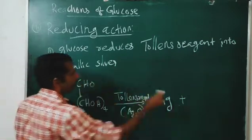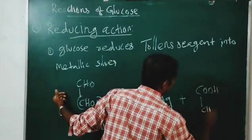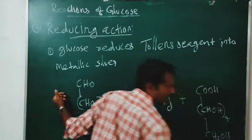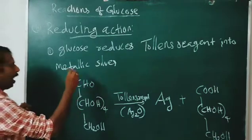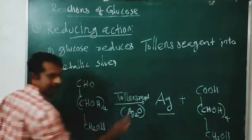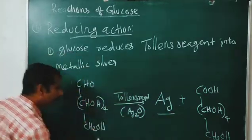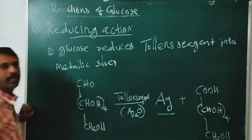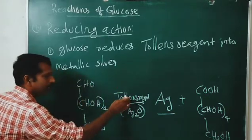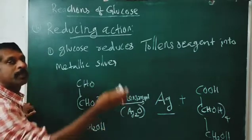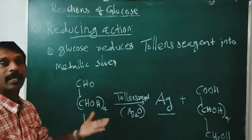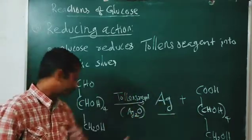At the same time, in the glucose the CHO group will be oxidized to COOH. So CHOH four times, CH2OH — this product is gluconic acid. Keep in mind: glucose can reduce Tollens' reagent into metallic silver, and at the same time this glucose will be oxidized to gluconic acid.